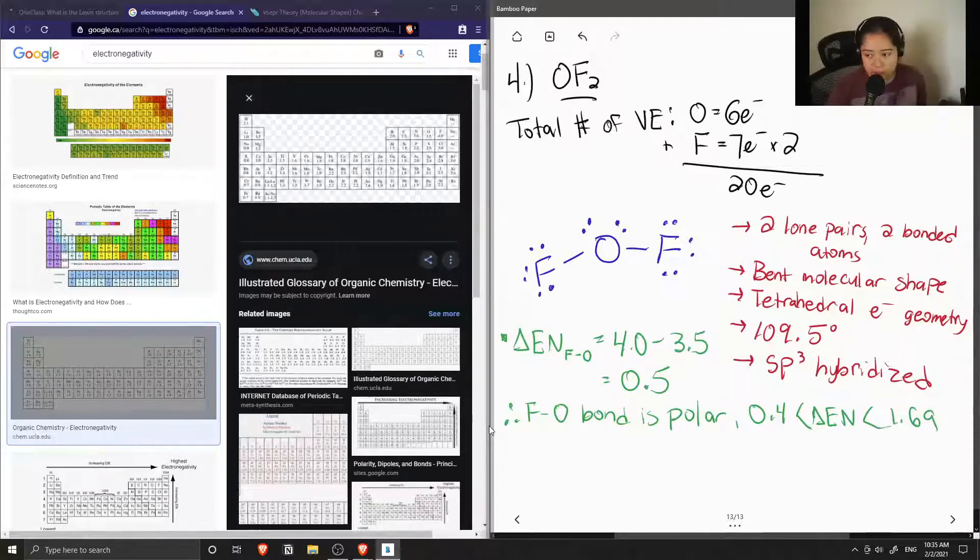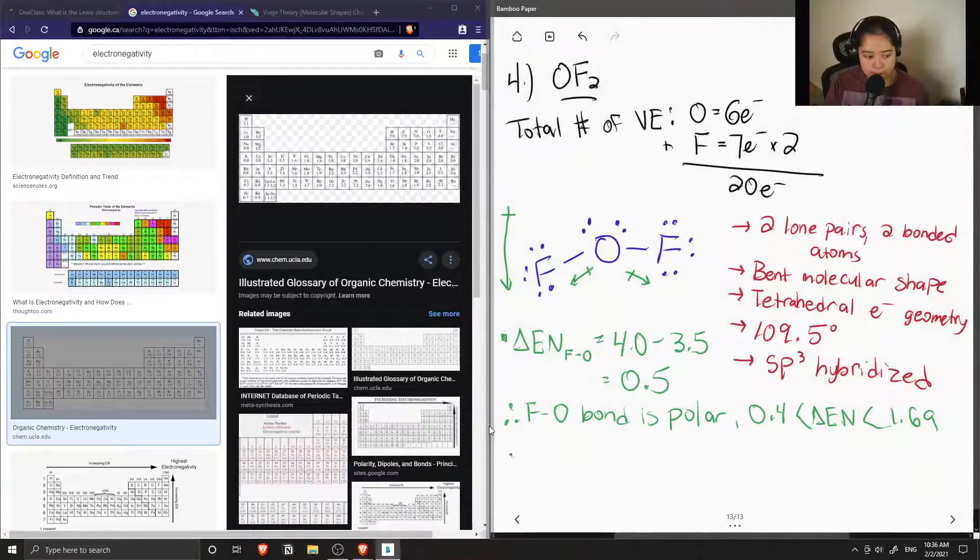Now that we know that the bonds are polar and the fluorines have a significant dipole moment going towards them, we can show the dipole moments in our structure like so. Because of the bent shape of our molecule, we can see that these dipole moments don't cancel out, so we have an overall non-zero dipole moment.